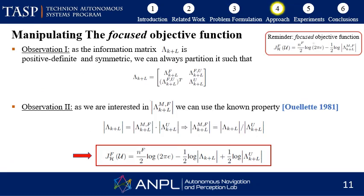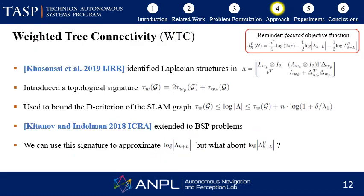Before applying any approximations, we first aim to manipulate the second term representing the marginal posterior information to make it easier to compute. Our first observation is that as the information matrix is positive definite and symmetric, we can always partition it such that all focused variables are in one sub-block and all unfocused variables are in another. We can then use the matrix determinant lemma to replace the determinant of the marginal posterior information with the quotient of the posterior information matrix of the entire joint belief and the conditional posterior information matrix over only the unfocused variables. In log space, this quotient becomes a difference, and the objective function now contains a term corresponding to the unfocused problem and a new term involving only conditioned unfocused variables.